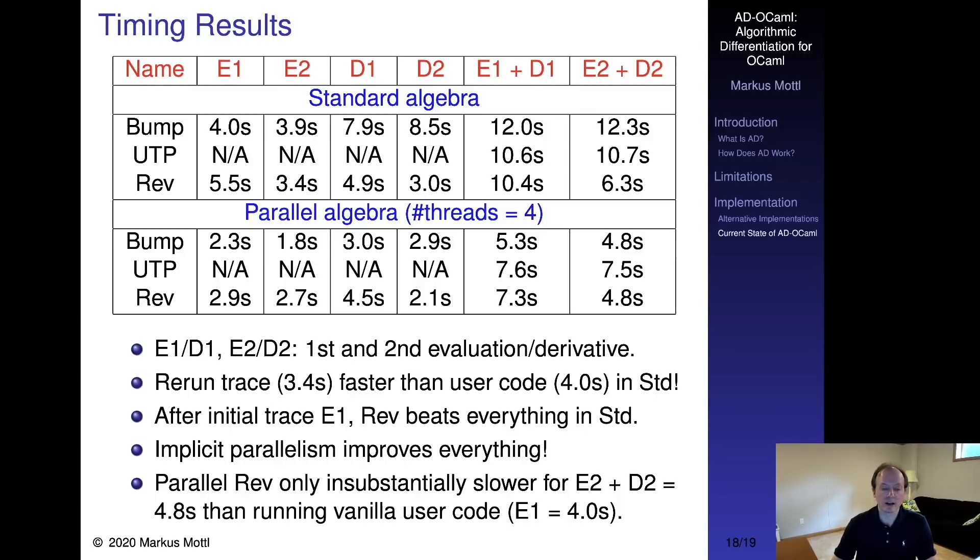This shows that, shockingly, rerunning the trace of your UTP program makes it faster than the original with the standard algebra. In fact, traced programs are hard to beat for most purposes. The test also shows that implicit parallelism, at least on this program, improves everything. It is interesting to note that evaluating the program and calculating its derivatives in parallel is only marginally slower than running the plain vanilla user program with the standard algebra. I hope this is a pretty convincing argument for AD-OCaml and the tagless final style, which makes combining program transformations so much easier.